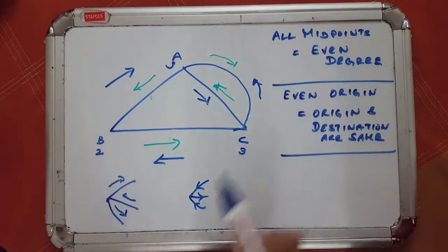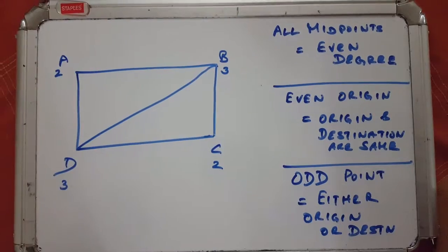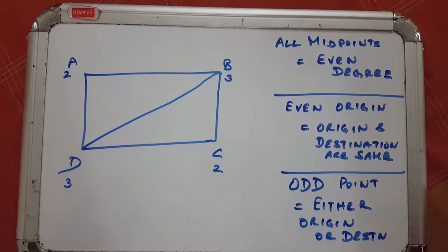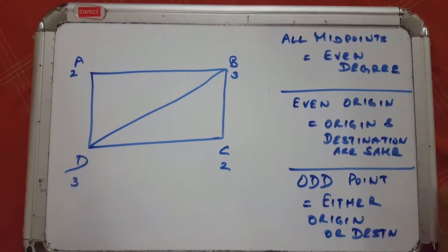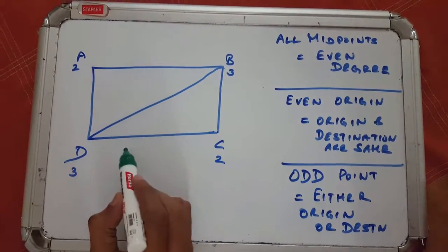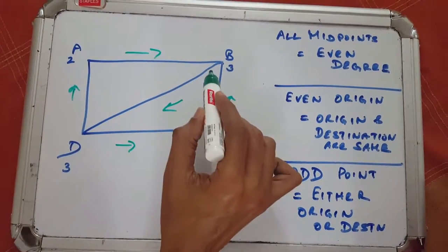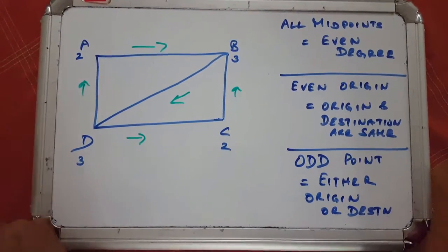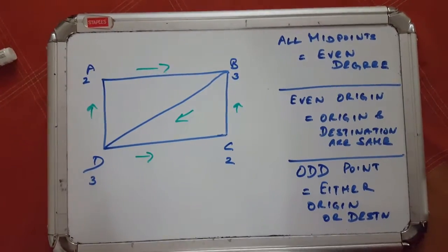Now let's try a different diagram with four vertices A, B, C, and D, with a line connecting B and D. The degrees are 2, 3, 2, and 3 respectively. We know that if you start at one odd-numbered vertex you'll end up at the other. Let's try: start at D, go to C, C to B, B to D, D to A, A to B — done! You started at D and ended at B, the two odd-numbered vertices. If you try starting from C or A, you'll find you can't traverse it.